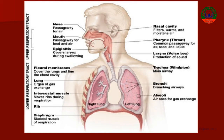The lower airway includes the trachea, bronchi, bronchioles, and finally the alveoli. So lower airway mein aata hai: trachea, bronchi, bronchioles, and alveoli.